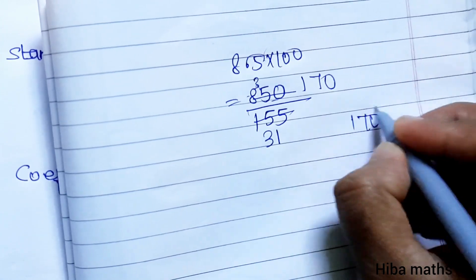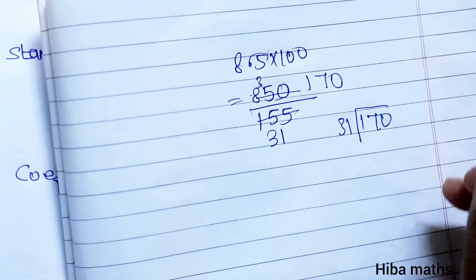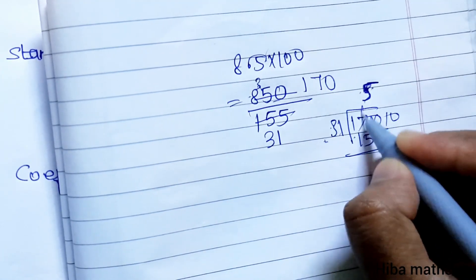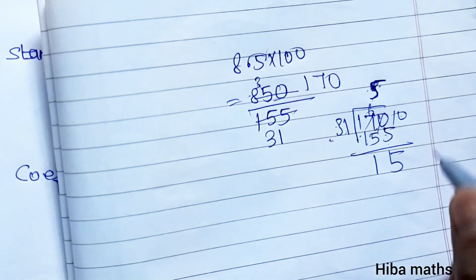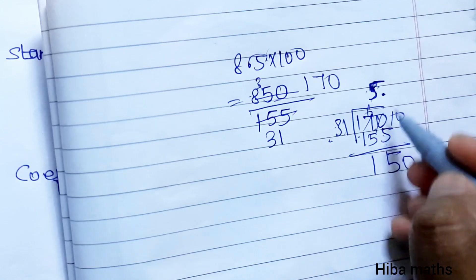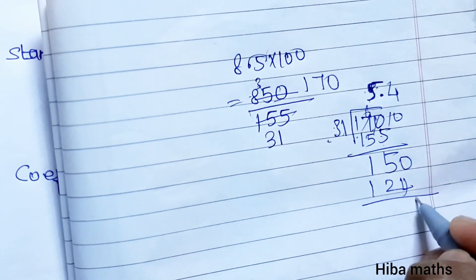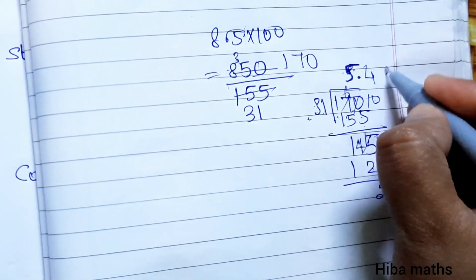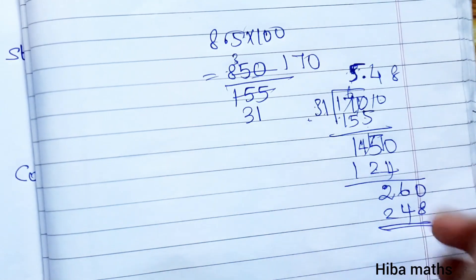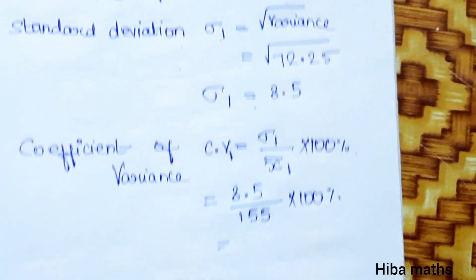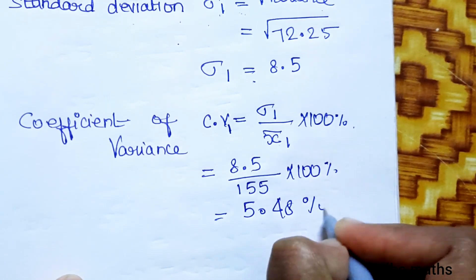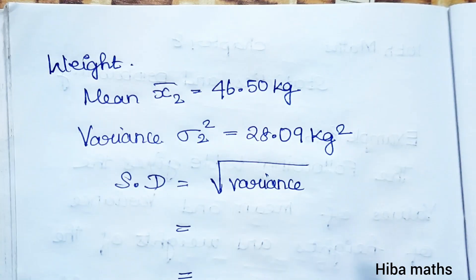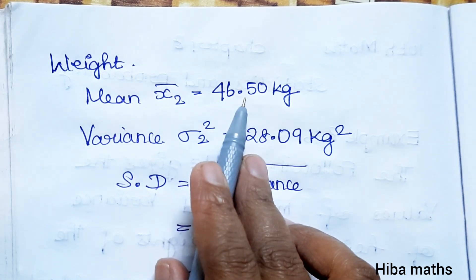Performing the division 850 ÷ 155, the answer comes out to 5.48. So CV1 for height is 5.48%.